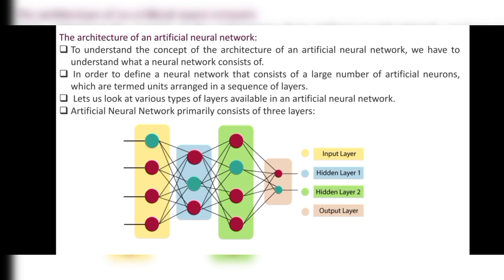Next, let's look at the architecture of an artificial neural network. To understand this, we need to understand what a neural network consists of — its input layers, other layers, and structure. A neural network consists of a large number of artificial neurons, termed units, arranged in a sequence of layers. The artificial neural network primarily consists of three layers.